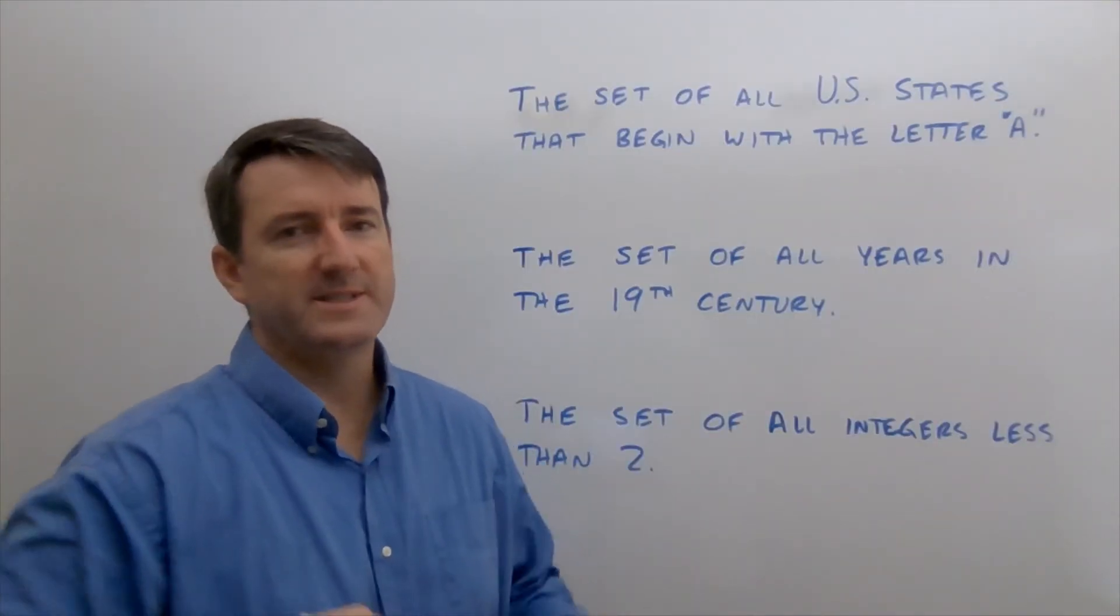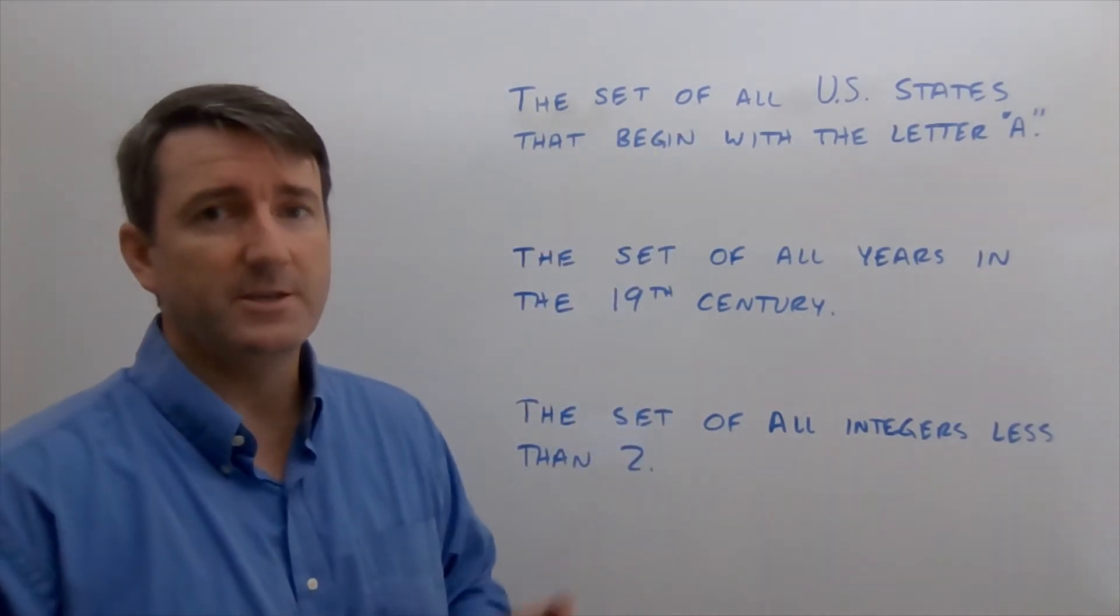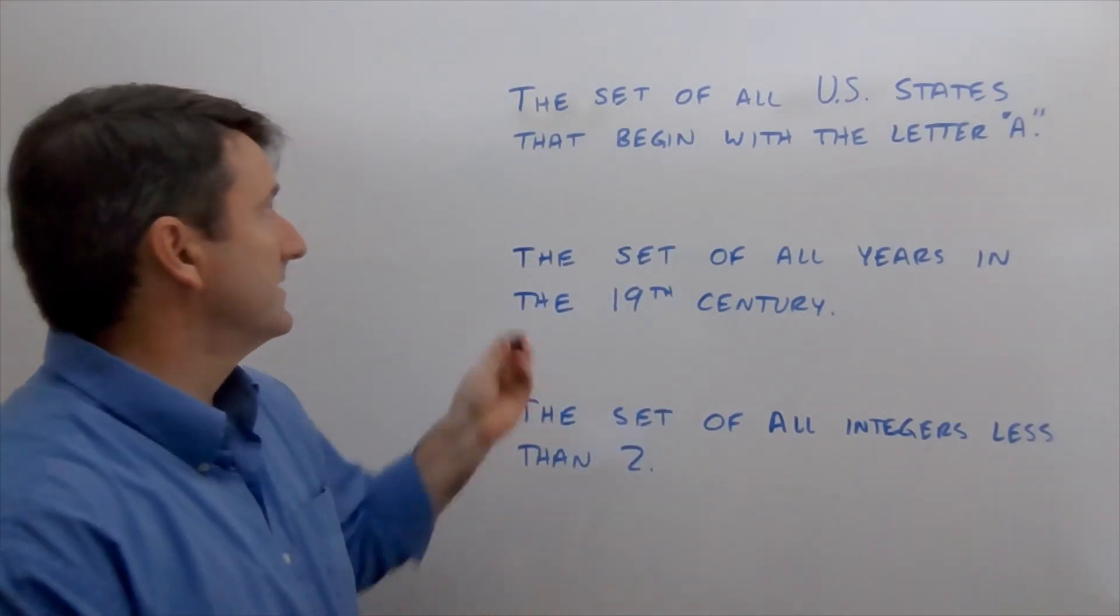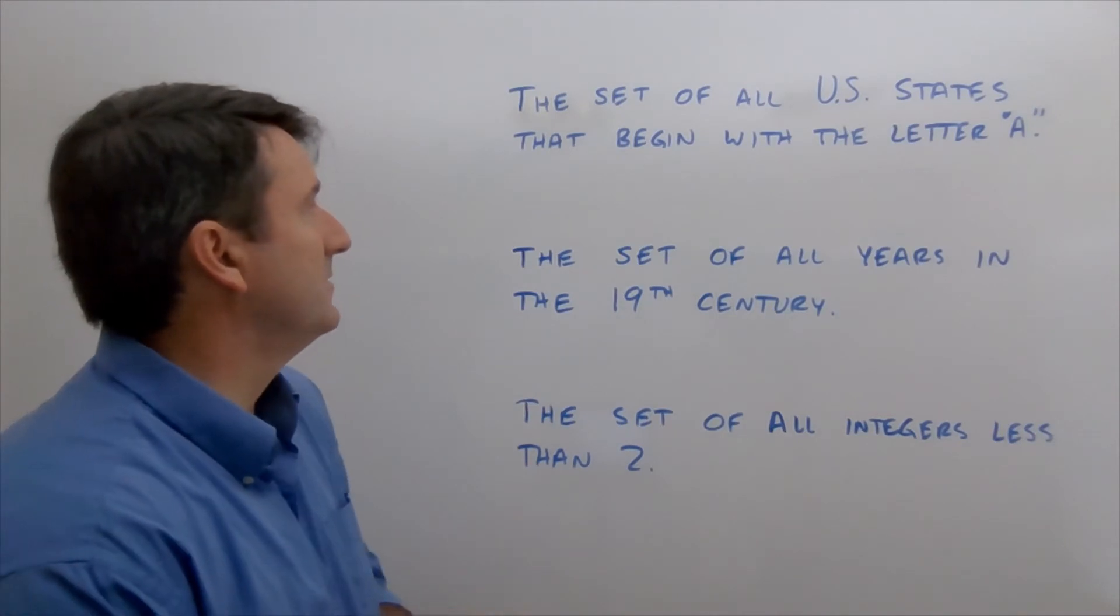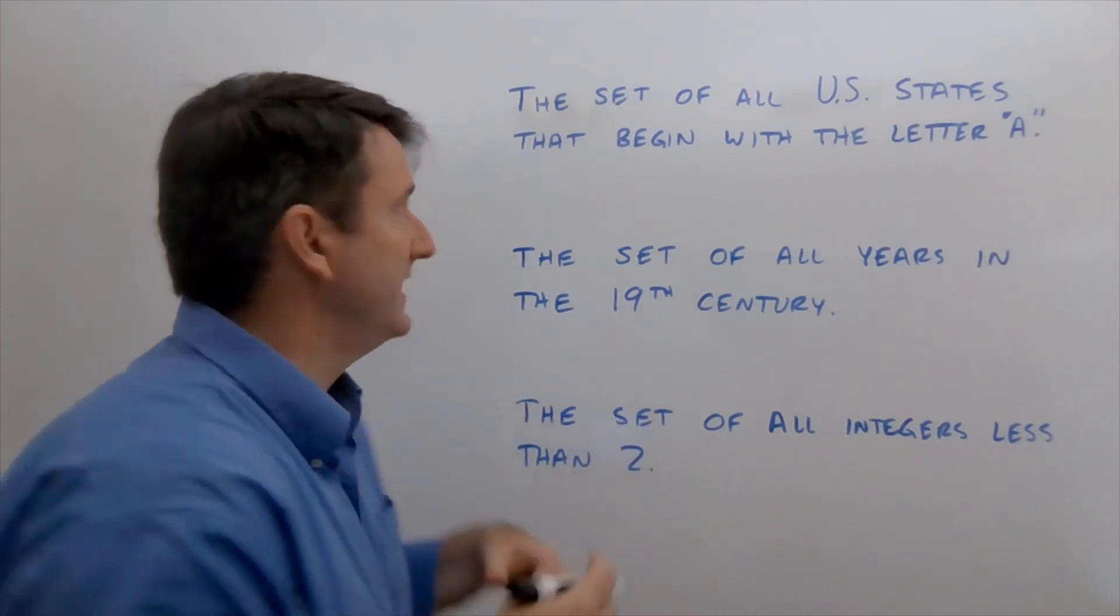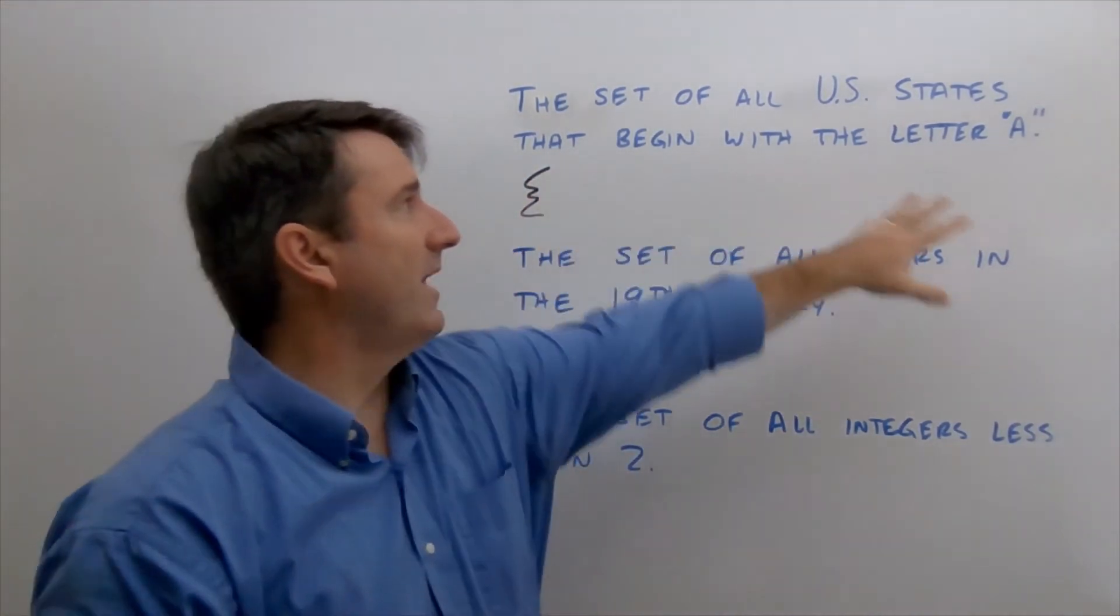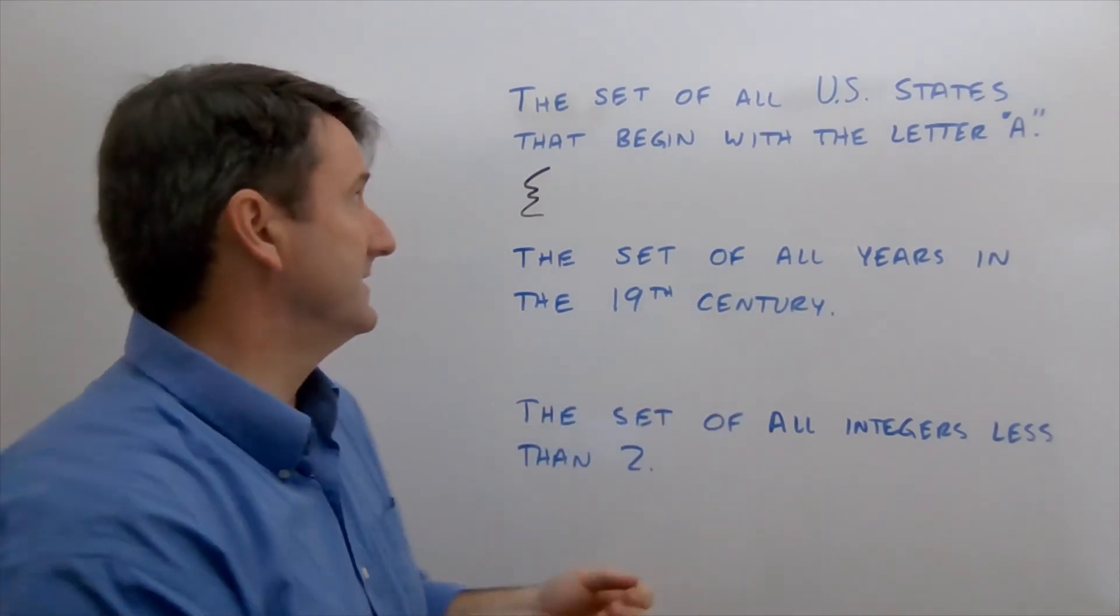Alright, let's do some examples. We're asked to write the contents of each of these sets using set notation. So this first one says the set of all U.S. states that begin with the letter A. So to put this in set notation, we're going to start with a brace and then we're going to write all the members of this set.